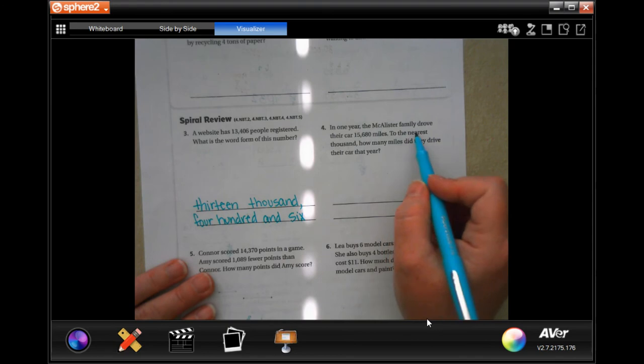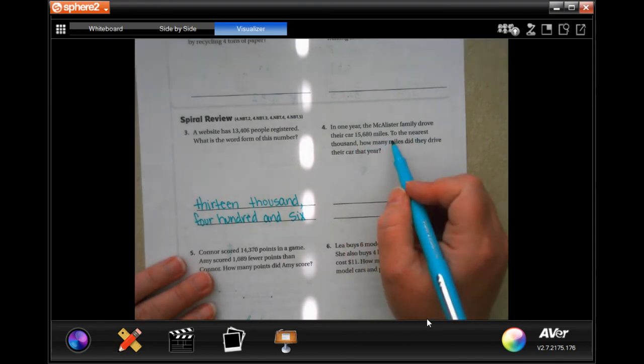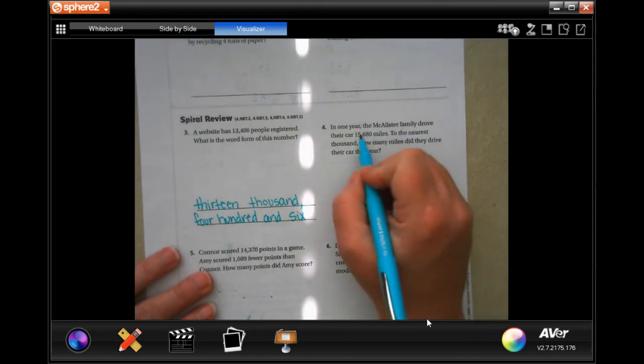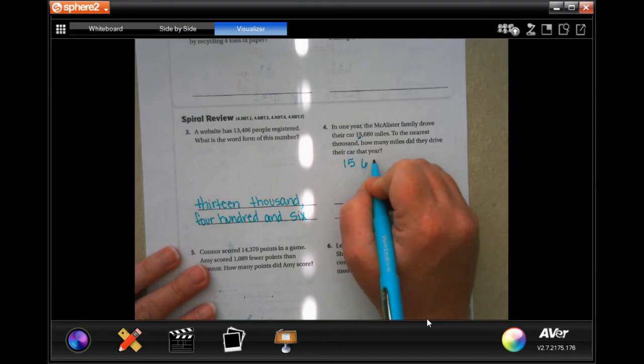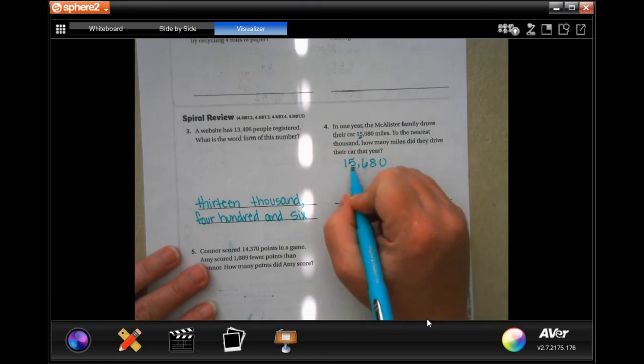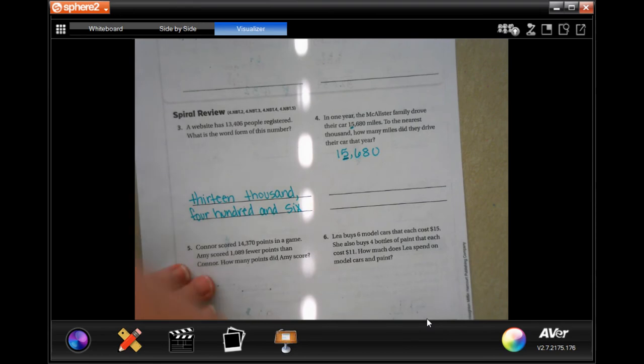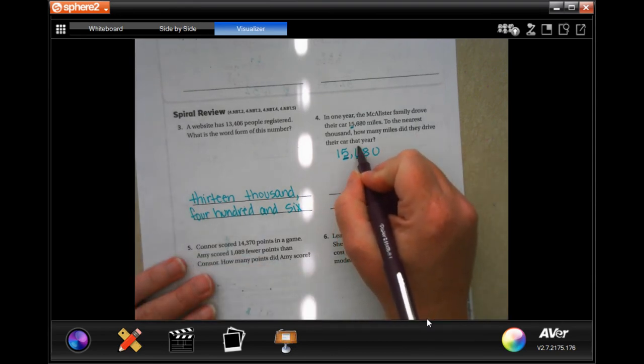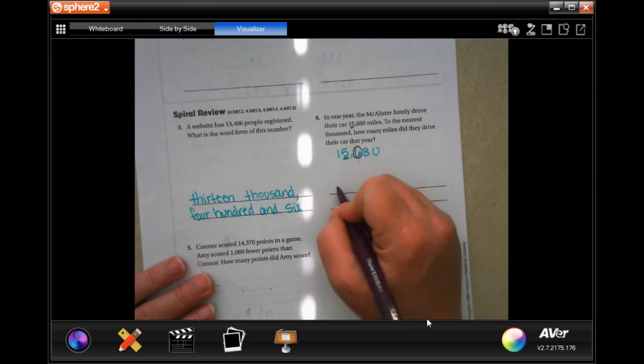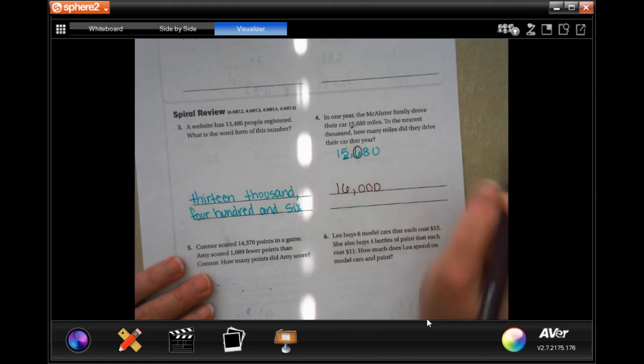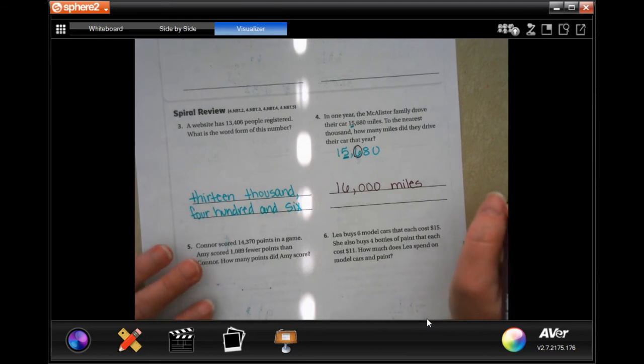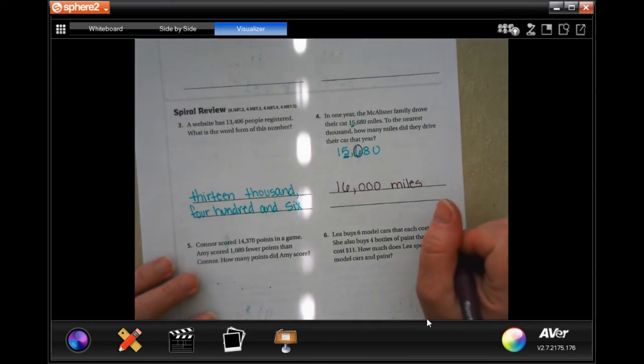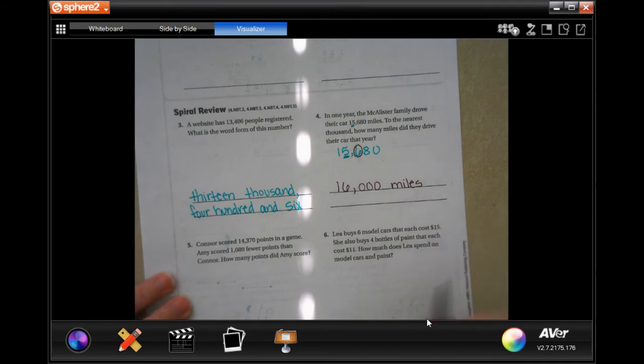In one year, the McAllister family drove their car 15,680 miles to the nearest thousand. How many miles did they drive their car? So right now, this is the place that it wants us to round it to, which means that I need to look at the 6. If that's bigger than 5, then that 5 is going to bump up 1. So 6 is definitely bigger than 5. So it's going to round up to 16,000. Don't forget to put miles because we are rounding, but it is a word problem, word answer.